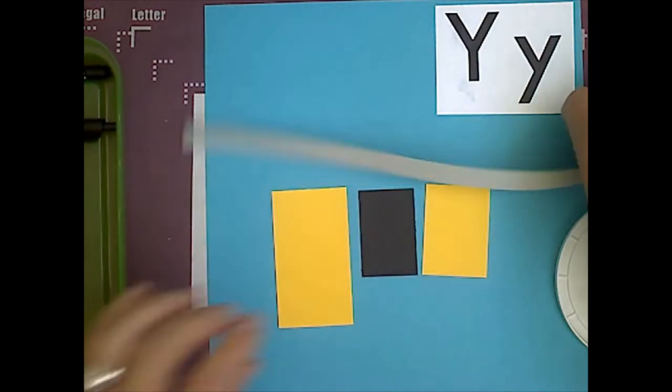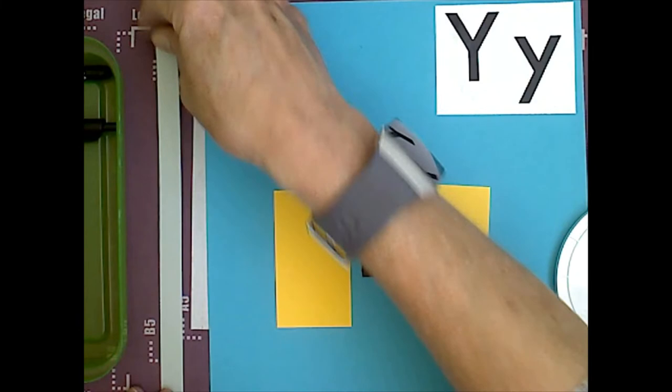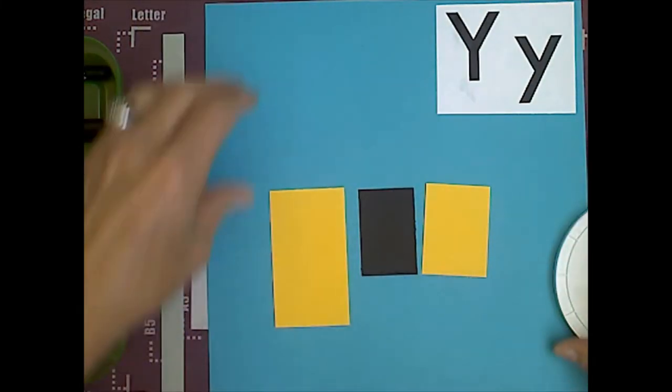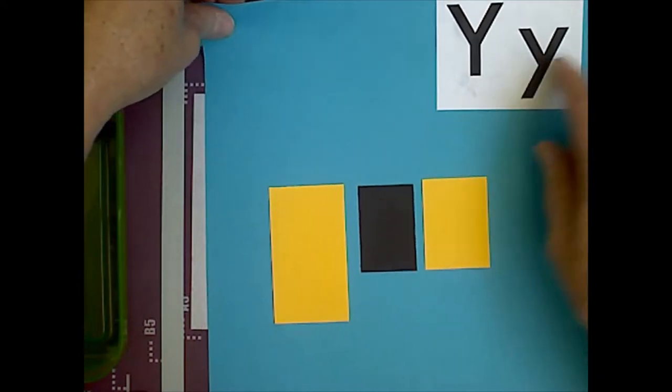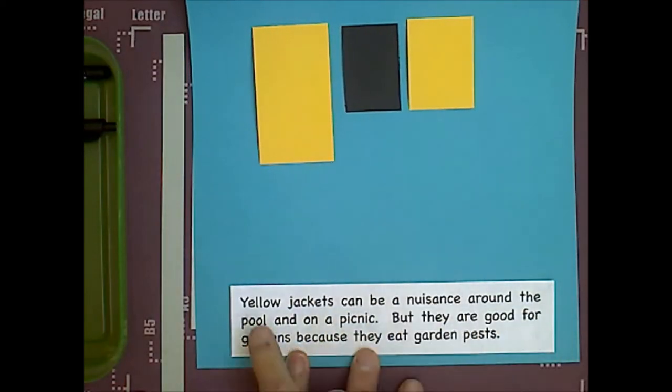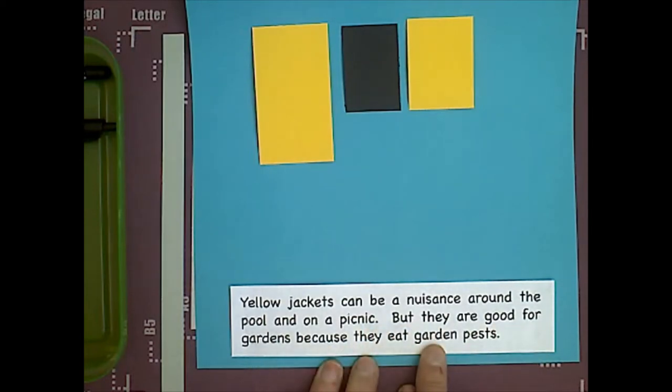Let's get our glue out. I'm going to set the gray one aside, and we have our three parts here. I've glued the Y's on, and I've already glued the words. Yellow jackets can be a nuisance around the pool and on a picnic, but they are good for gardens because they eat garden pests.